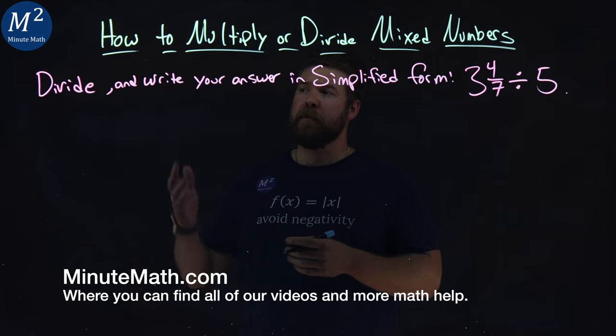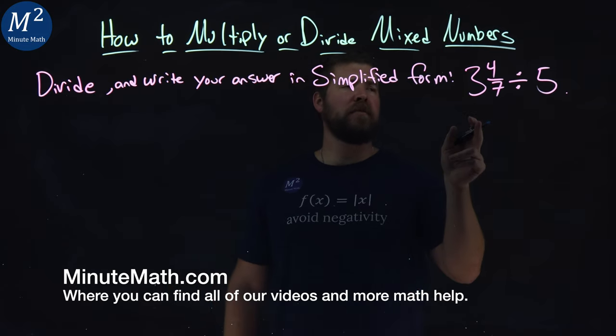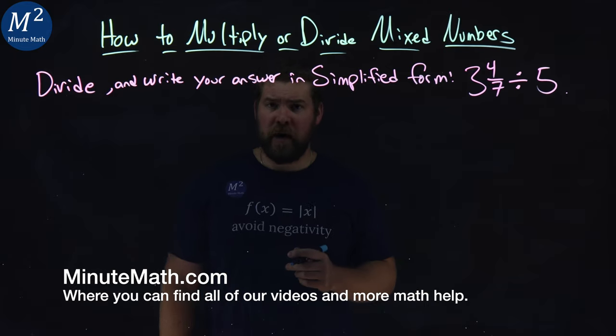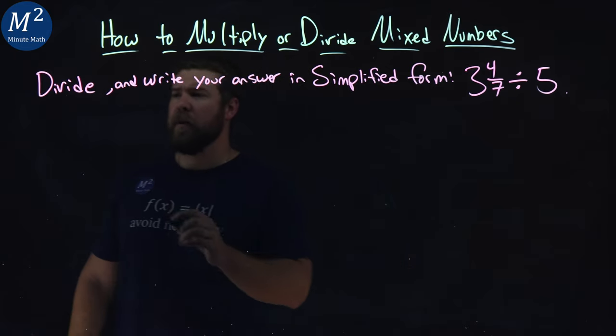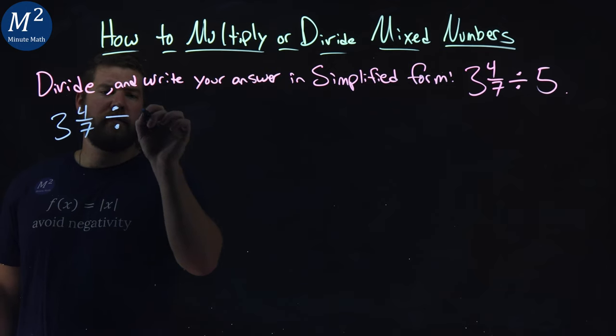We're given this problem here. Divide and write your answer in simplified form: 3 and 4/7ths divided by 5. Let's go rewrite this. 3 and 4/7ths divided by 5.